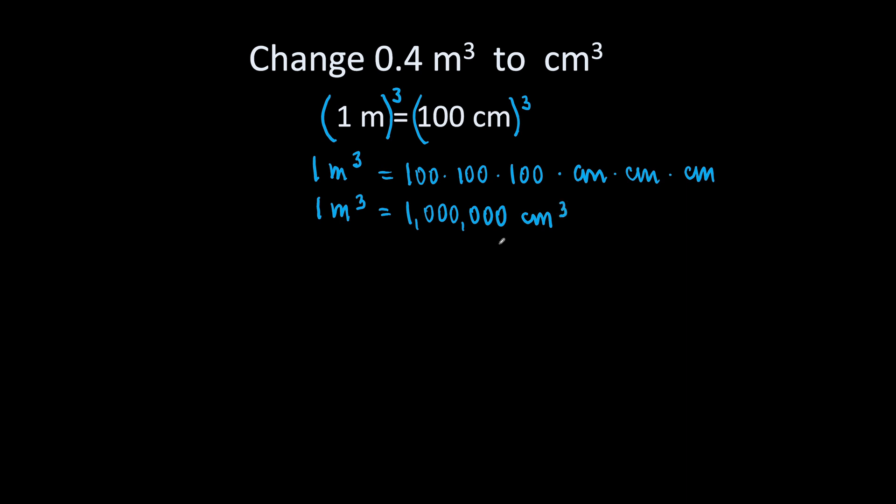Very good! Now we are ready to convert. Write what you have as a fraction. We have 0.4 cubic meters. Write it over 1. We are going to multiply by the conversion factor. You are going to take this conversion factor. 1 cubic meter is equal to 1 million cubic centimeters. And you are going to write it here in such a way so your cubic meters cancel out.